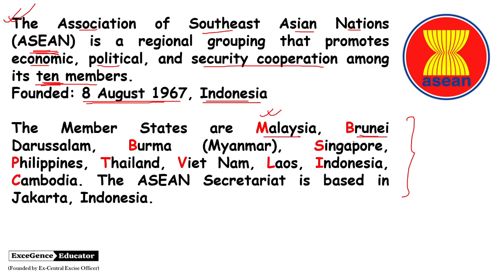The member countries are: Malaysia, Brunei Darussalam, Burma (the old name of Myanmar), Singapore, Philippines, Thailand, Vietnam, Laos, Indonesia, and Cambodia. Notice the initials: M-B-B-S, P-T-V, L-I-C. The ASEAN Secretariat is based in Jakarta, Indonesia.